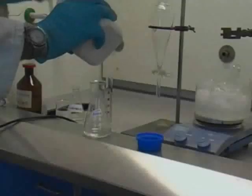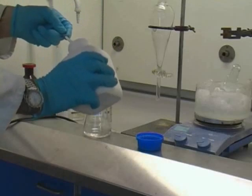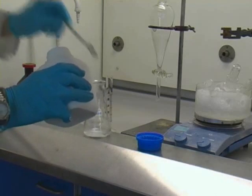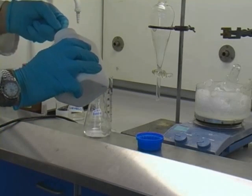Transfer the organic layer to a 250ml conical flask and add enough magnesium sulphate to mop up any residual water.